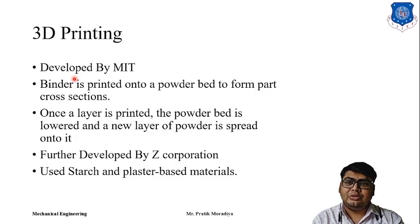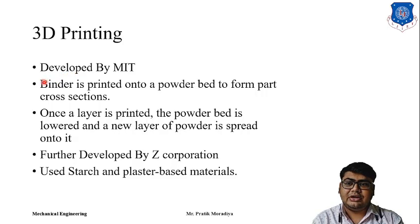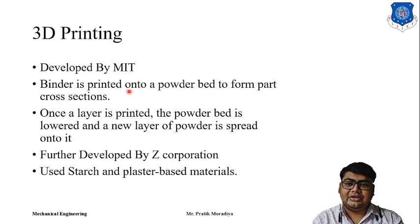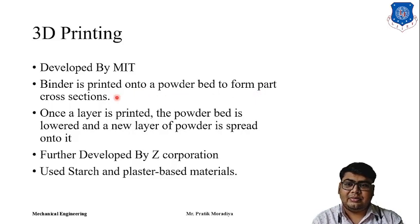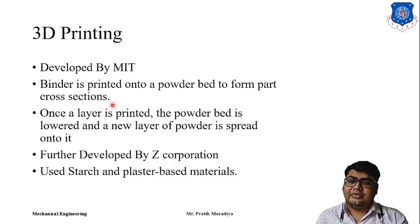If you have seen 2D printing, we are using ink which is sprayed on paper. In 3D printing, instead of ink we are using binders, and these binders are printed on a powder bed. Whenever there is a binder, the powder bed gets solidified — the binder is a type of glue — so the cross-section of a part will be made.